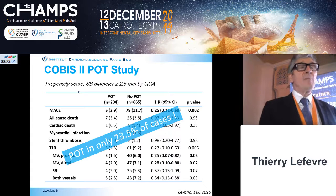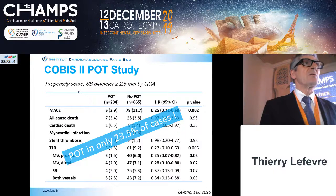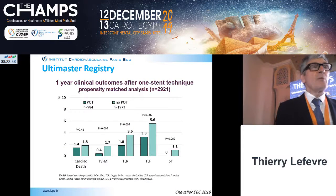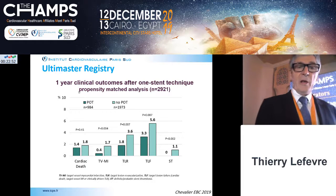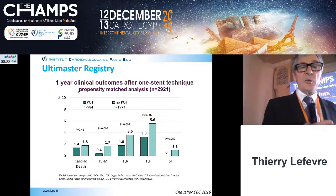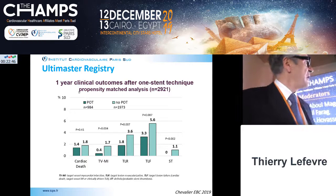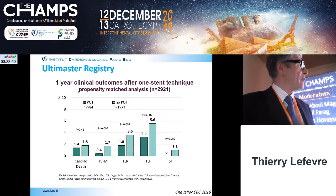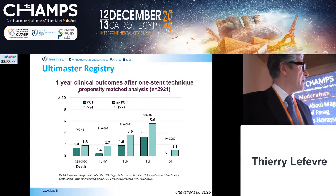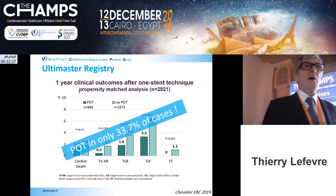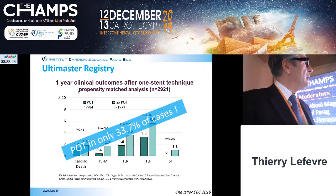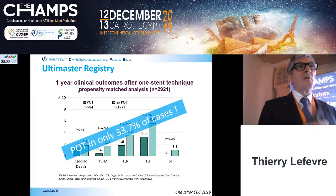The more recent Ultimaster registry, presented by Bernard Chevalier this year, again shows a big difference comparing POT versus no POT: TLF divided by 2, less stent thrombosis (0% compared to 1.1%), less target vessel MI, and less TLR. POT is again very important clinically. However, even in this recent data, POT was used in only one third of patients.